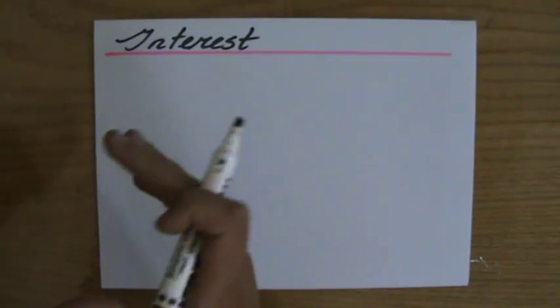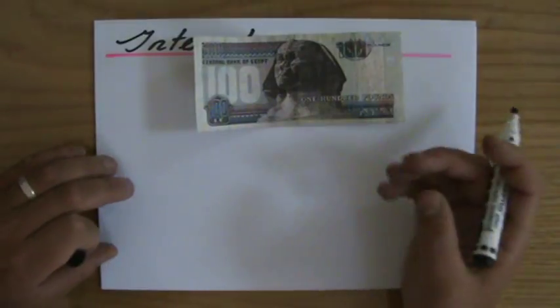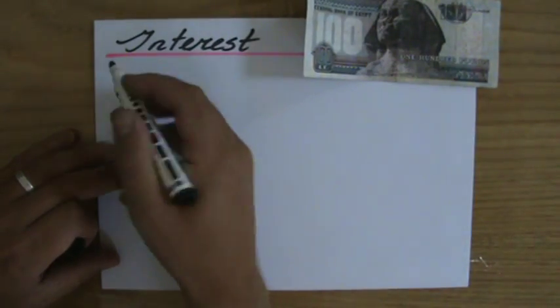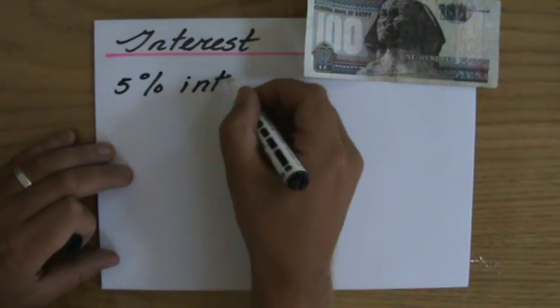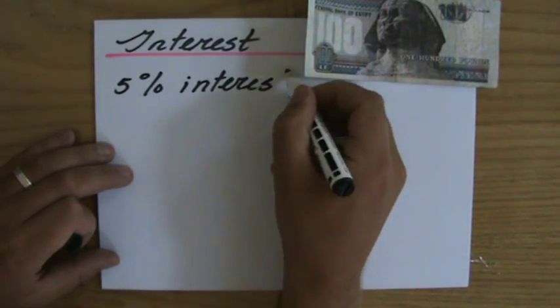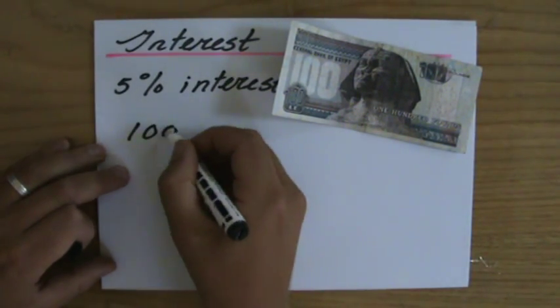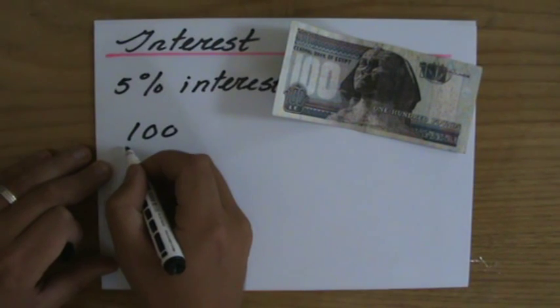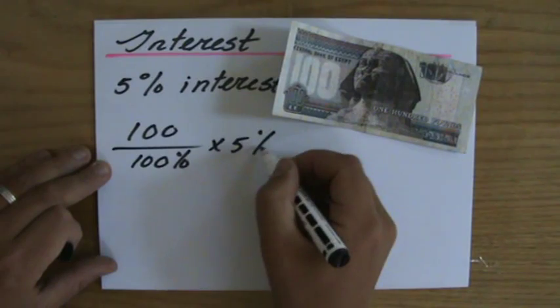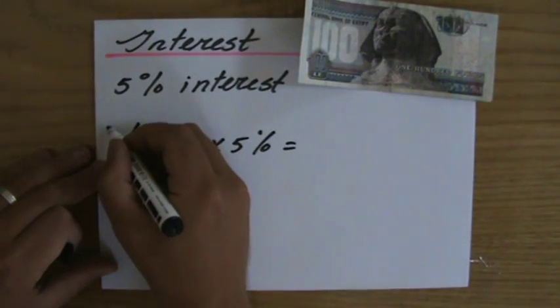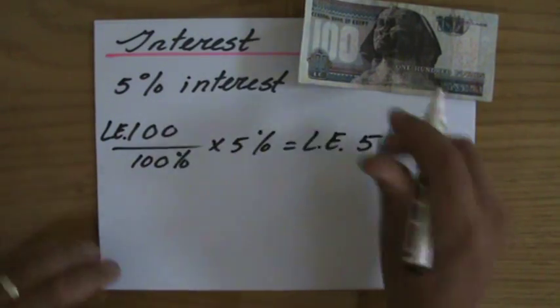But let's say for instance I put a hundred LE, in this case the Egyptian currency, in my bank account and the bank says, well I'm gonna give you five percent interest over the money you put in your account. Now let's say I put in a hundred LE, then I'll have at the end of the year 100 LE divided by 100% times 5%. So the bank is gonna give me five LE interest.